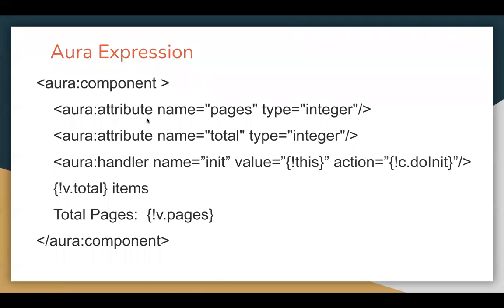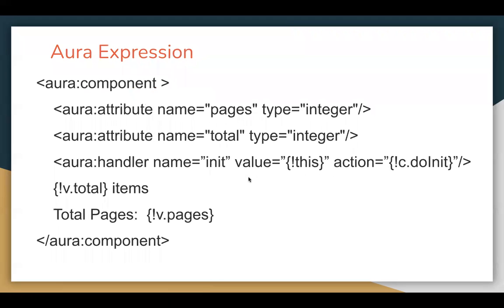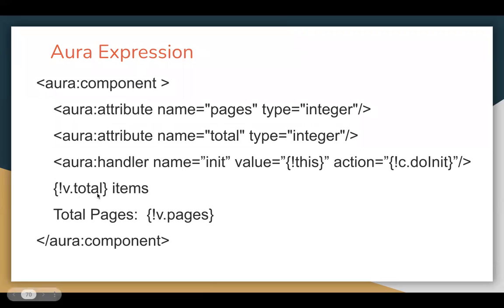In the Aura example, attribute name is pages with type integer, and attribute name is total with type integer. There is a handler calling the function c.doInit. The doInit function is defined in the JavaScript controller, where we set total to 20 and pages to 100. The expressions in the markup are written as {!v.total} and {!v.pages} enclosed in curly braces.